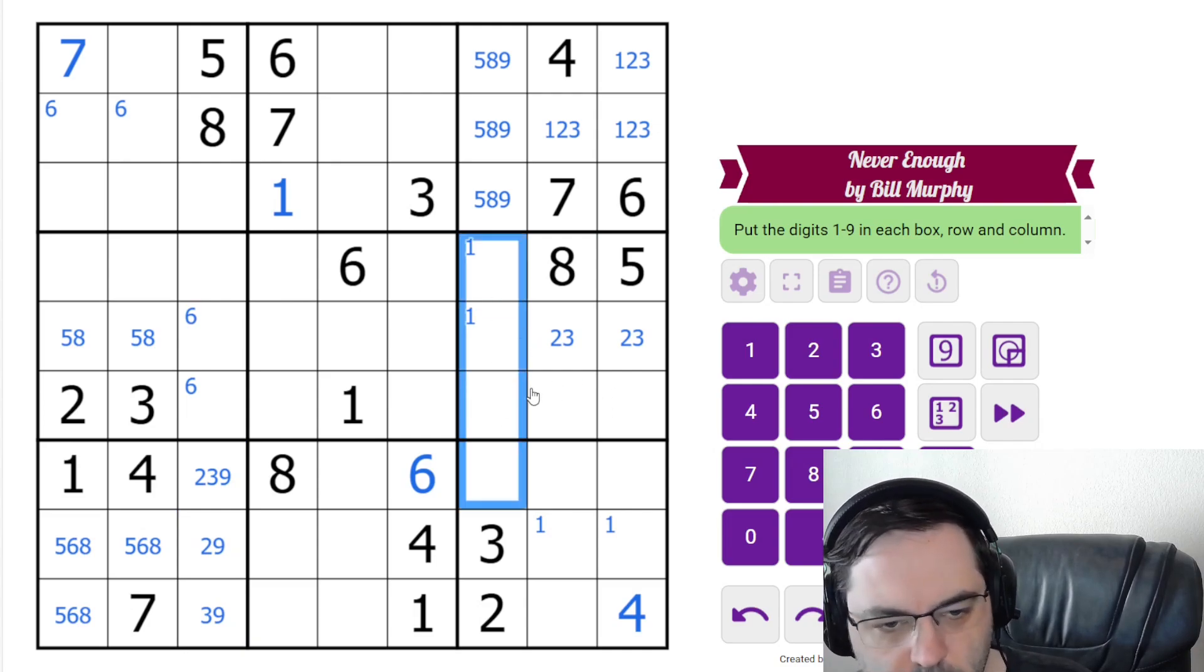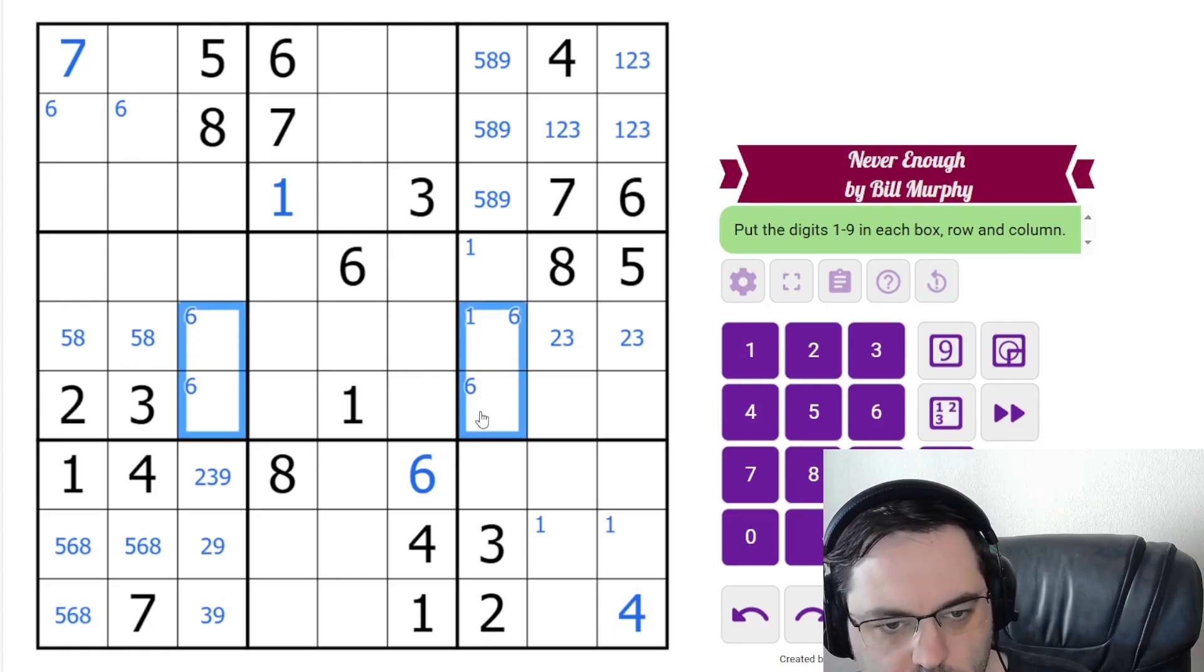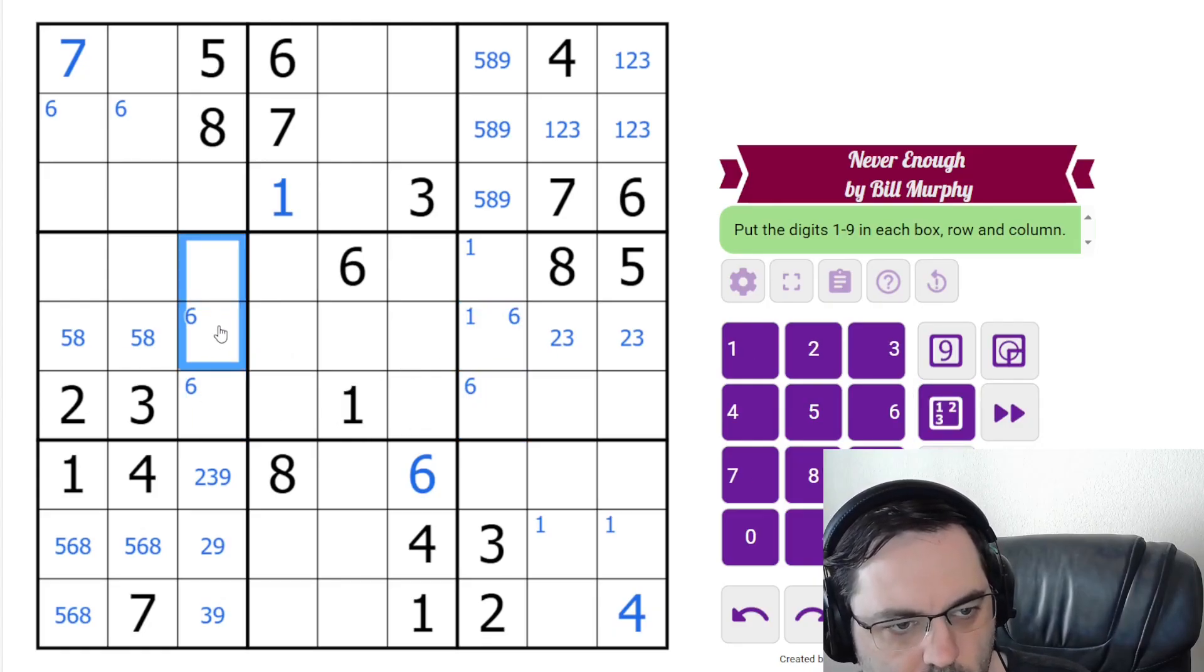There's probably a simpler way to see that, but I'm going to use it because I saw it. Same for 6, 5, and 8 here. So it's slightly advanced. We don't know exactly where 6 is, but we do know it's ruled out of these cells, and so that gives us a triple.